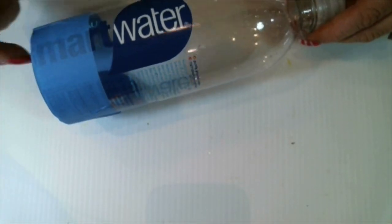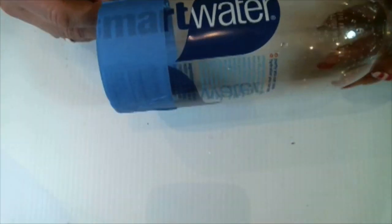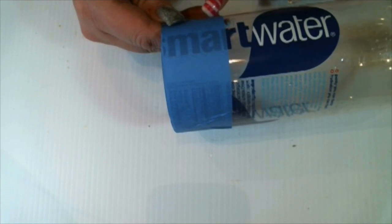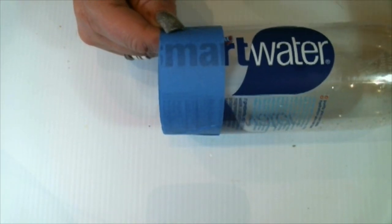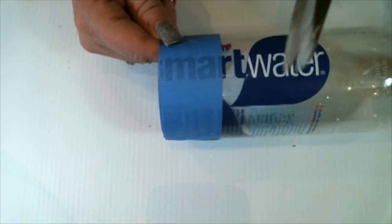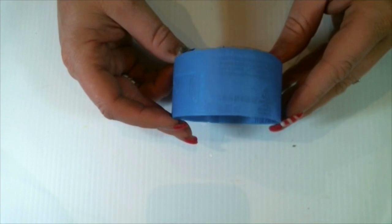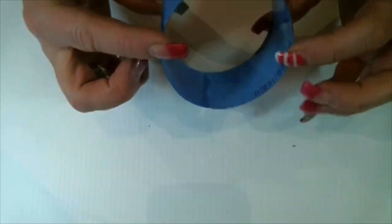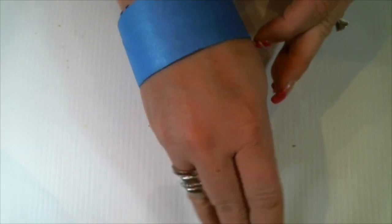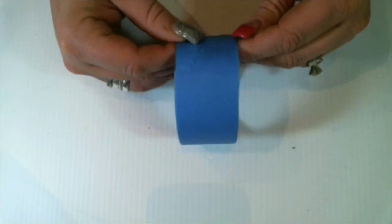You are also going to need some masking tape or painters tape. Step one: you are going to need to take your water bottle and take some painters tape or masking tape and wrap it around the bottle. Next, you are going to want to take your large scissors and cut out the bracelet.